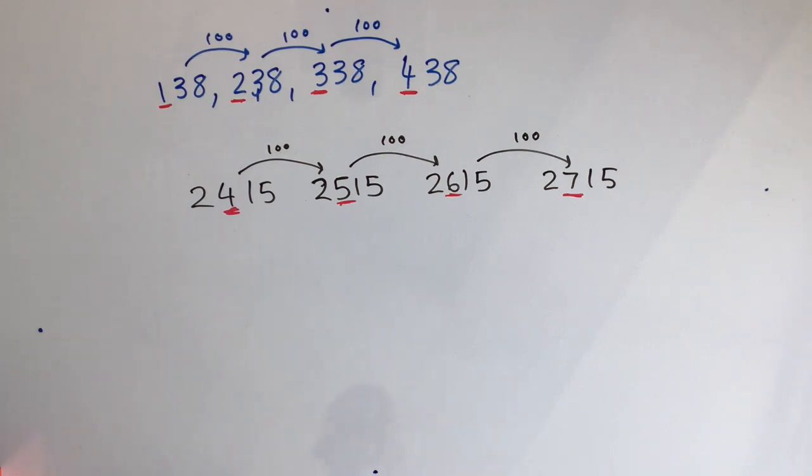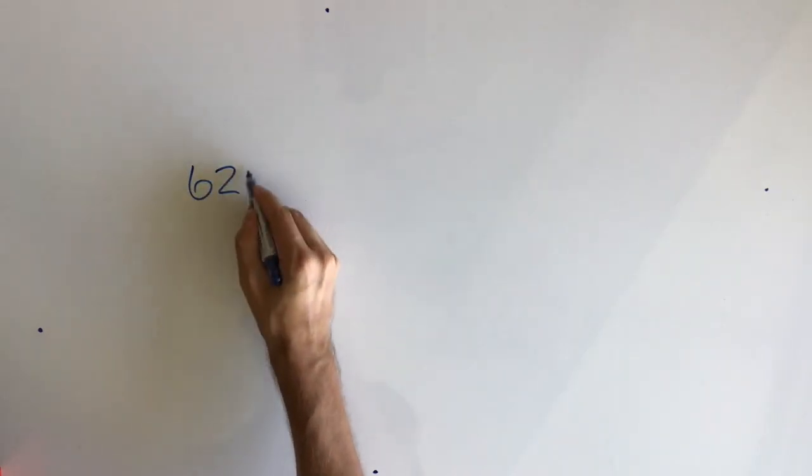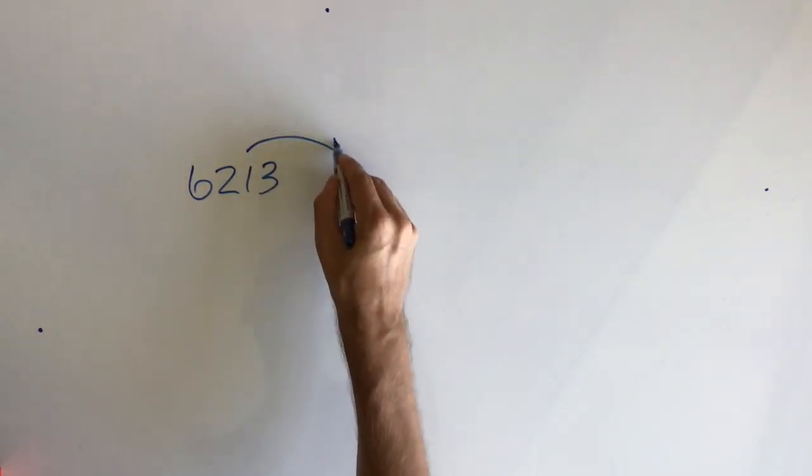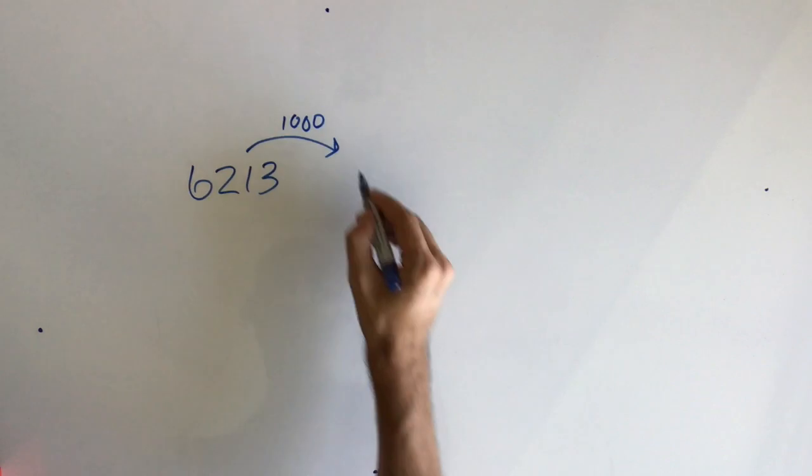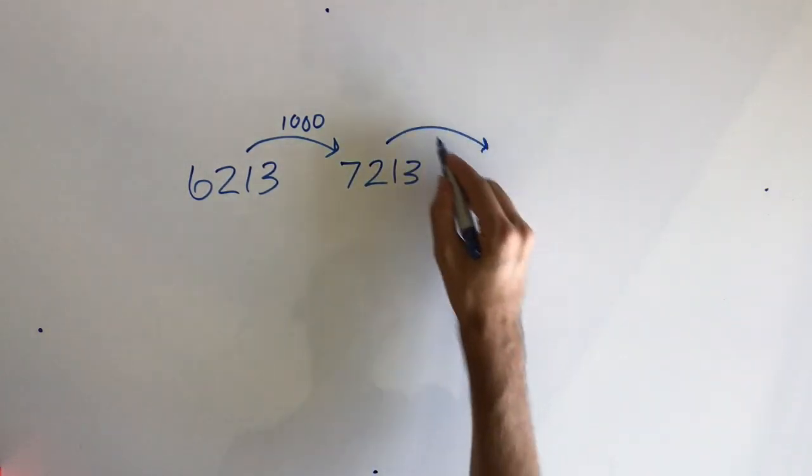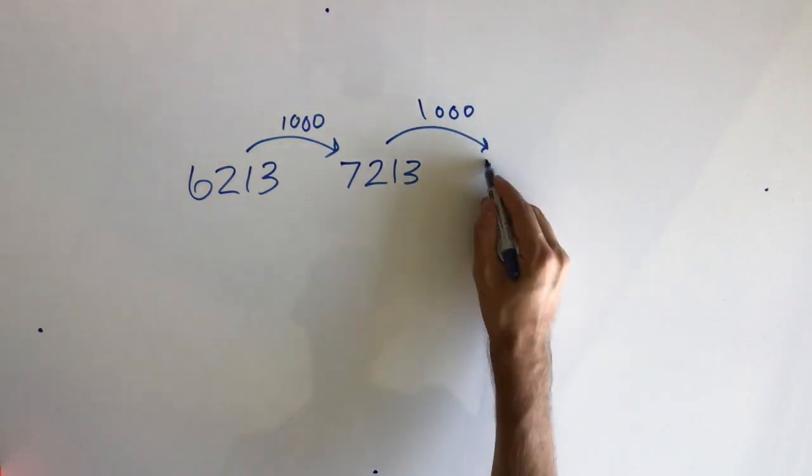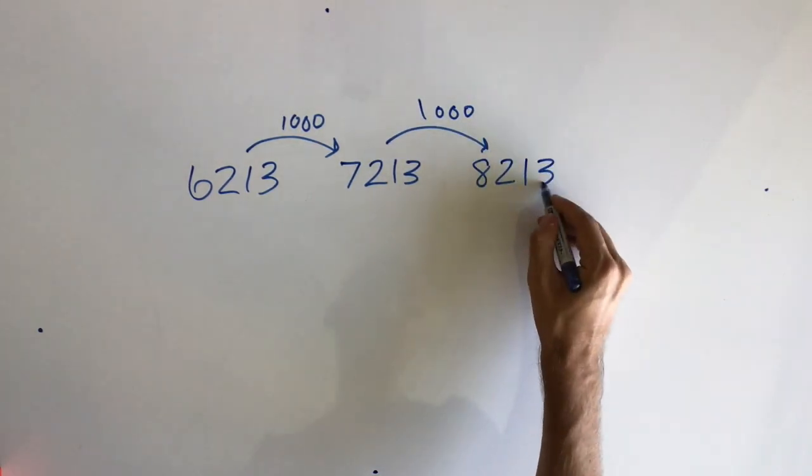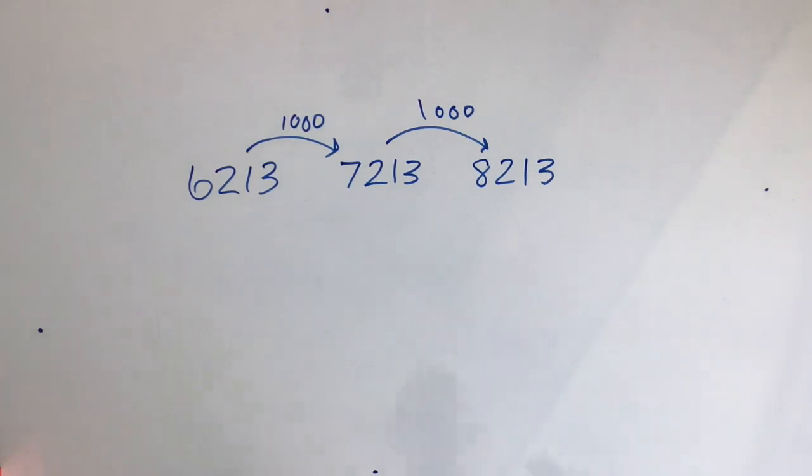Now let's take a look at the one thousands. What do you think will happen when I count in one thousands? Well let's give you an example. 6,213, up 1,000, 7,213, up 1,000, 8,213. So this time the thousands number goes up by a value of 1,000 every single time.